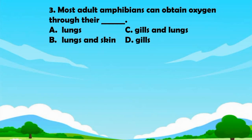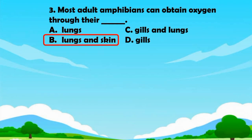Question number three. Most adult amphibians can obtain oxygen through their blank. A. Lungs. B. Lungs and skin. C. Gills and lungs. D. Gills. The answer is B. Lungs and skin.